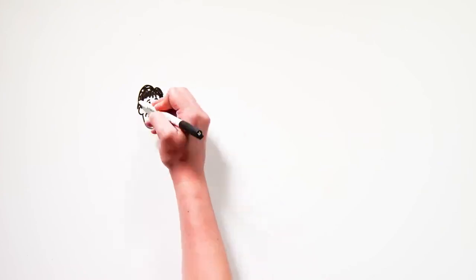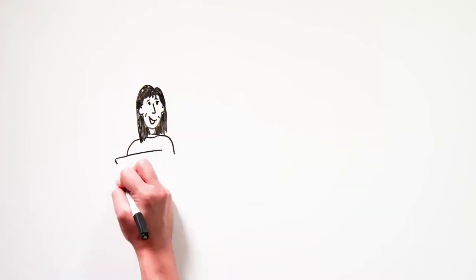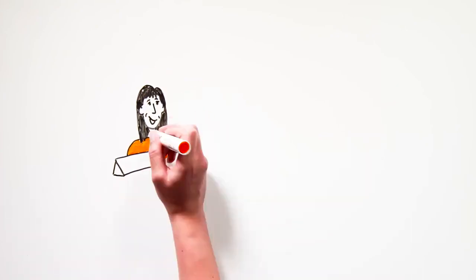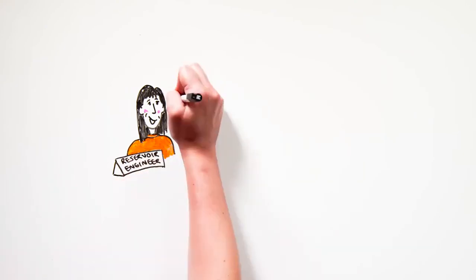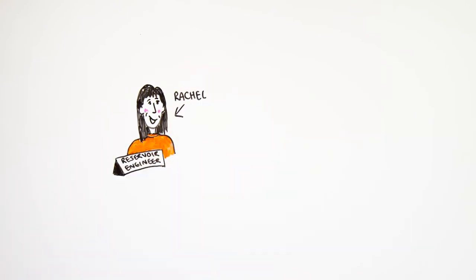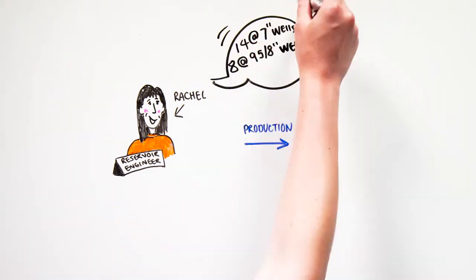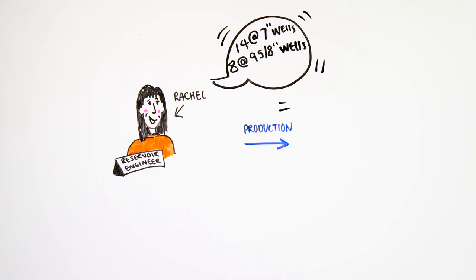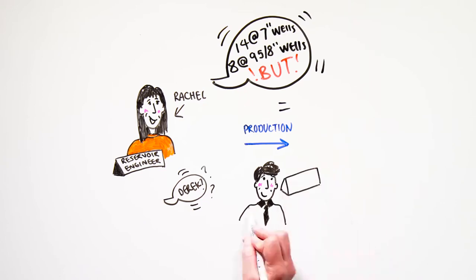Dave engages reservoir engineer Rachel to re-look at the project economics. Well, with respect to production rates, the simple solution here is to increase the size of the wells. While it initially took 14 7-inch wells to meet the production target, the field could be developed with eight larger bore 9-5-8-inch wells instead. But if we do that, it is unlikely that single relief well contingency can be achieved. Let me ask Derek. He's the drilling engineer on this project. He might be able to help.